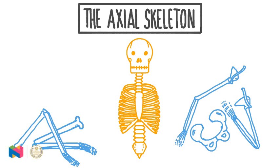In this video, we will learn to describe the structure of the human axial skeleton. We will learn about the function of the spinal column, the skull, and the thoracic cage. And we will learn about the types of joints most commonly found in the axial skeleton.